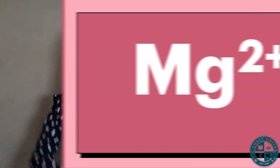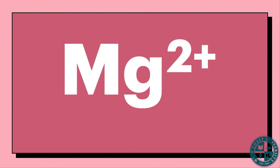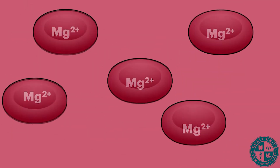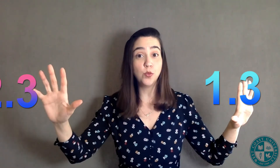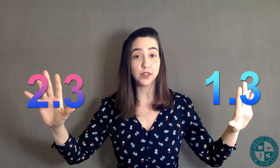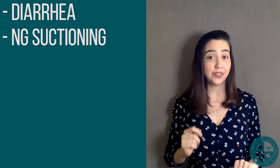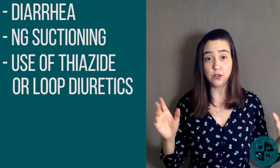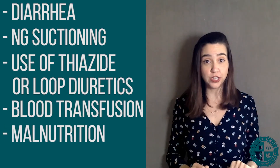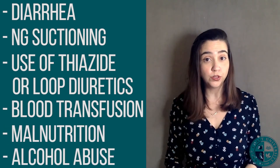Last but not least, we're going to talk about magnesium. Magnesium is the second most abundant intracellular cation after, you guessed it, potassium. A normal magnesium level is going to be from 1.3 to 2.3 milliequivalents per liter. Hypomagnesemia is a serum magnesium below 1.3. Some etiologies include diarrhea, NG suctioning, thiazide or loop diuretics, blood transfusions, malnutrition, and alcohol abuse, to name a few.